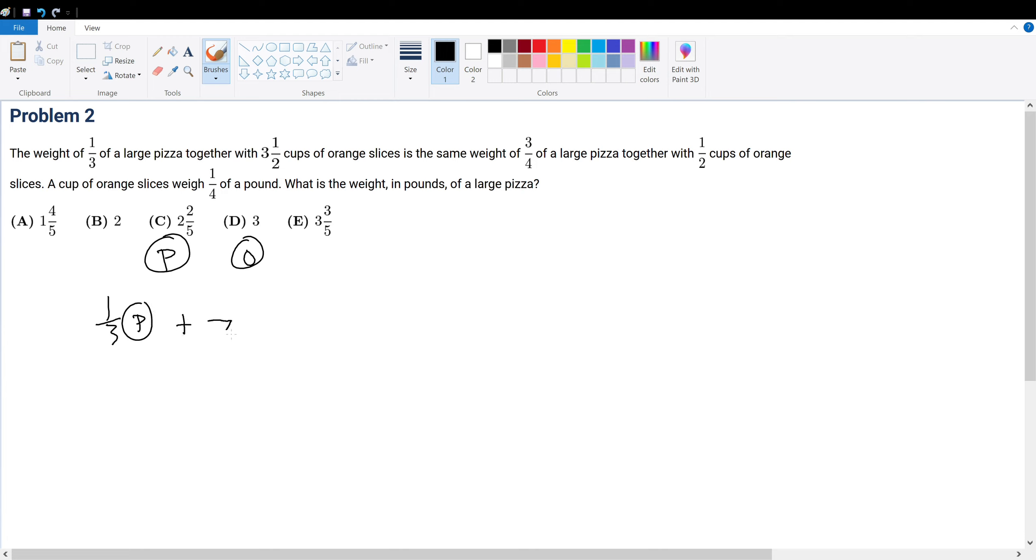...plus seven over two (because that's the fraction) cups of oranges is equal to three-fourths of a large pizza plus half cup of orange. And we know that a cup of orange slices, one cup of orange slices, is equal to a fourth of a pound.